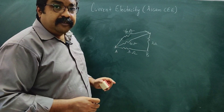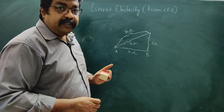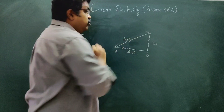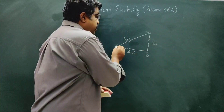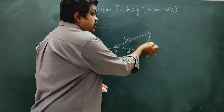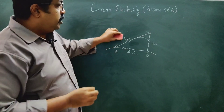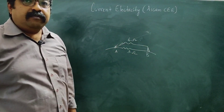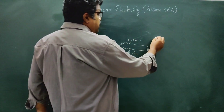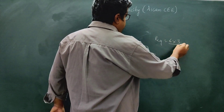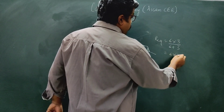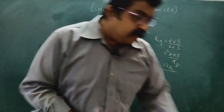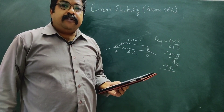So we have 6 ohm and 3 ohm in parallel. R equivalent = 6 × 3 divided by (6 + 3) = 18/9 = 2 ohm. The equivalent resistance between A and B is 2 ohm. Option D is the correct answer.